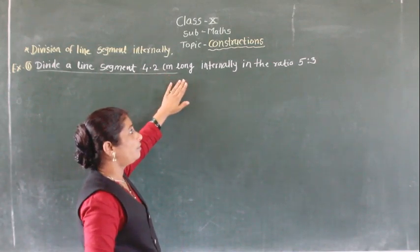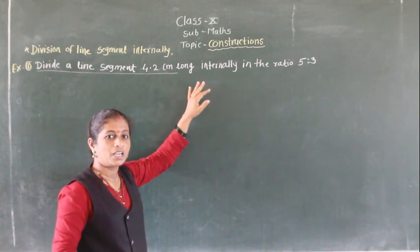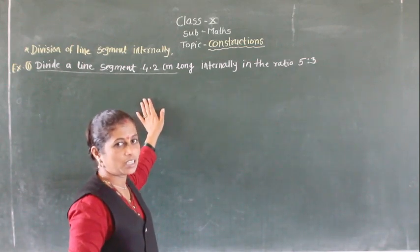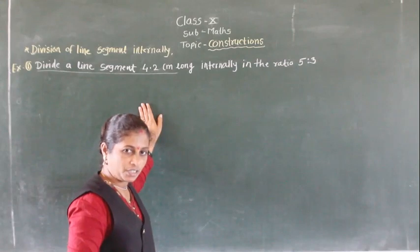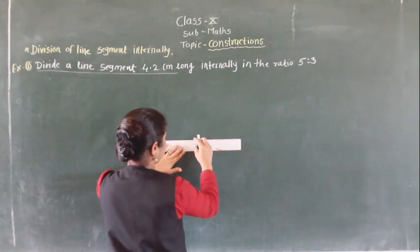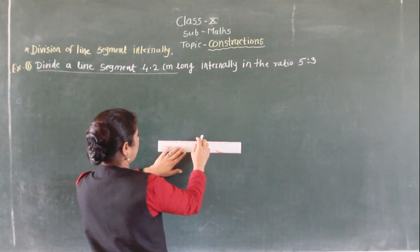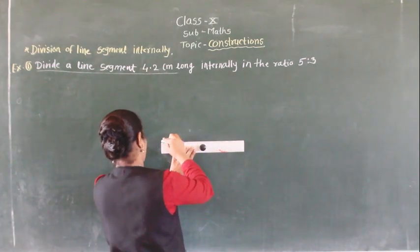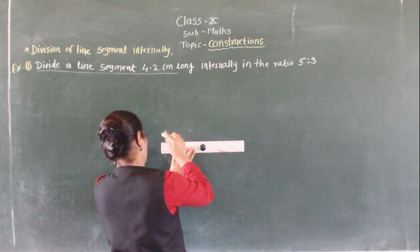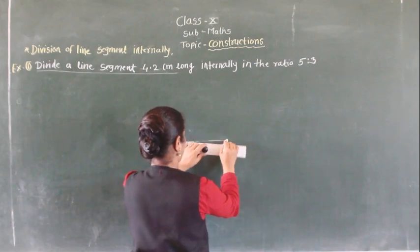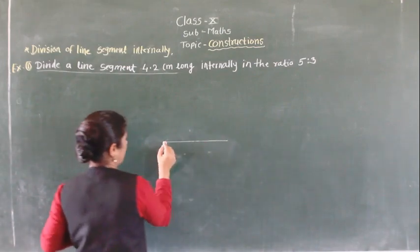When we do the whole construction, it is compulsory to write the steps of construction and also the justification. So first, we draw a 4.2 centimeter long line segment. This is the line segment with length 4.2 centimeters. This is AB.